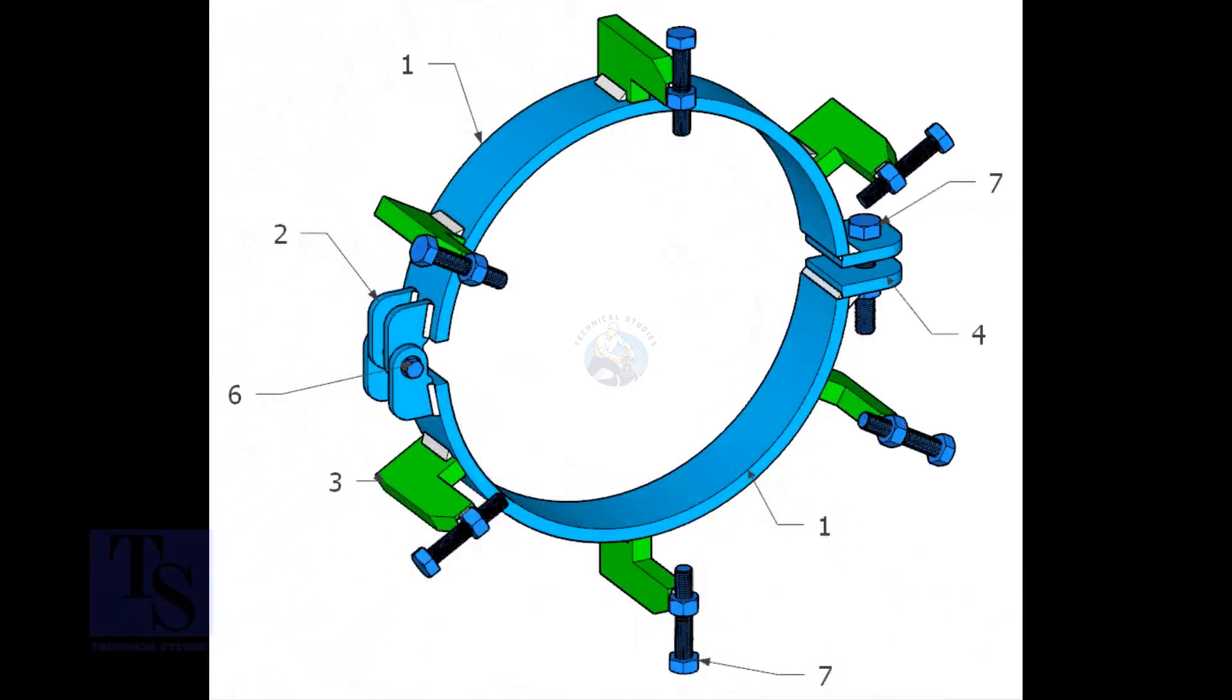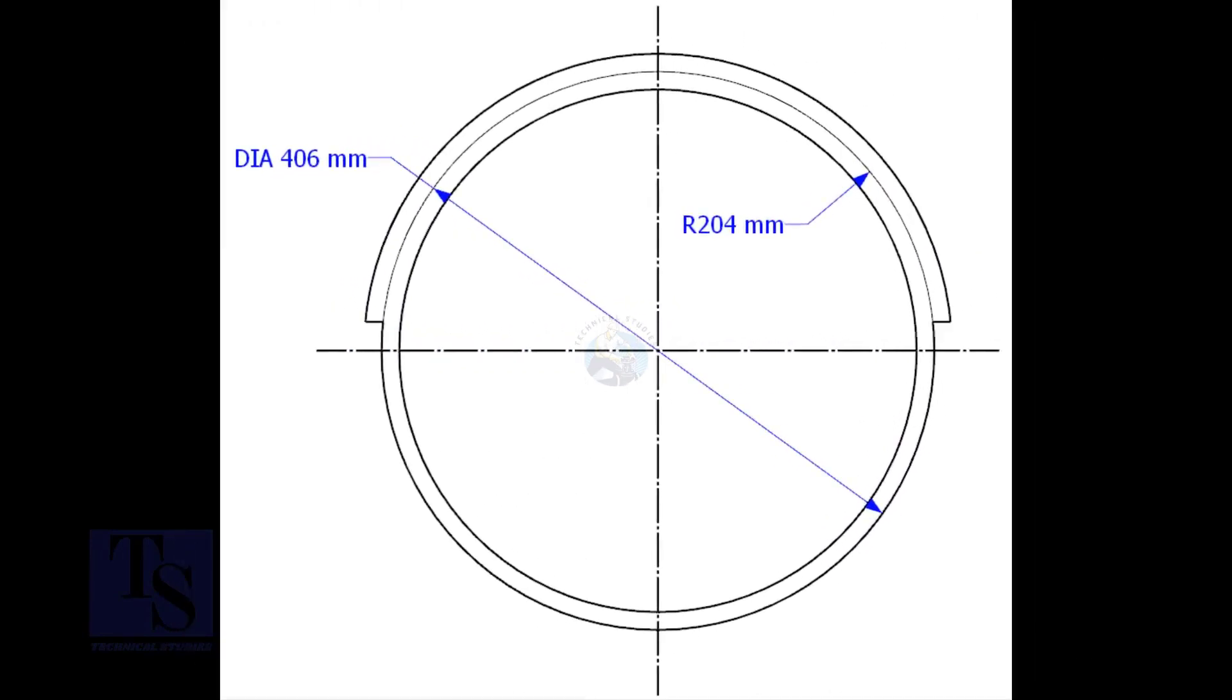For item number one, cut a 70-millimeter width piece from a 16-inch pipe. Cut it exactly into two pieces. 40 schedule is acceptable. Open the pipe segment enough to suit the outer diameter of the pipe.